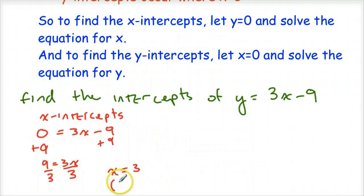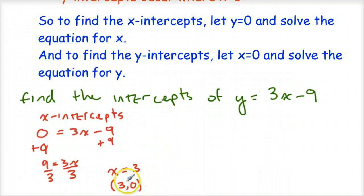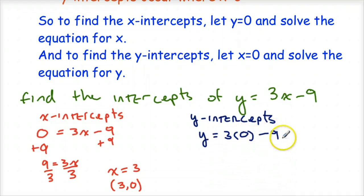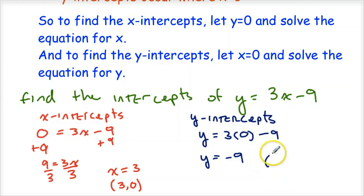You can think of the x-intercept as the point with coordinates (3, 0), since we already know the y-coordinate is 0 because it's the x-intercept. This tells us the x-value of the coordinate is 3, so the ordered pair is (3, 0). To find the y-intercept, we let x equal 0: y equals 3 times 0 minus 9, so y equals 0 minus 9, which is negative 9. That gives us the ordered pair (0, -9).